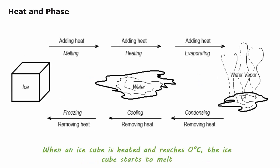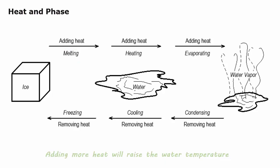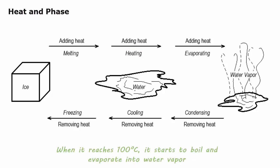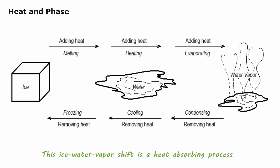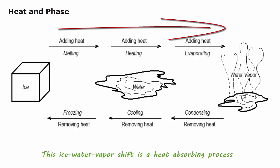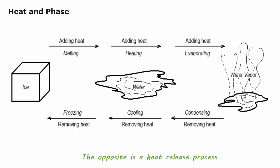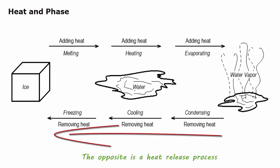When an ice cube is heated and reaches zero degrees C, the ice cube starts to melt. Adding more heat will raise the water temperature. When it reaches 100 degrees C, it starts to boil and evaporate into water vapor. This ice-to-water-vapor shift is a heat-absorbing process. The opposite is a heat-release process.